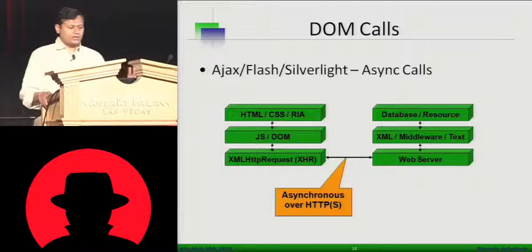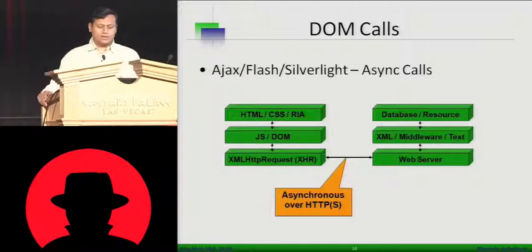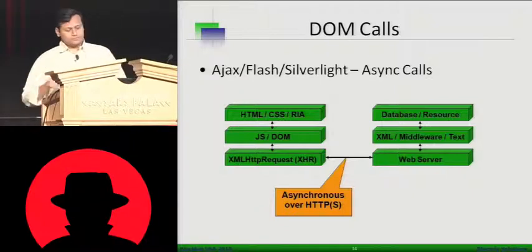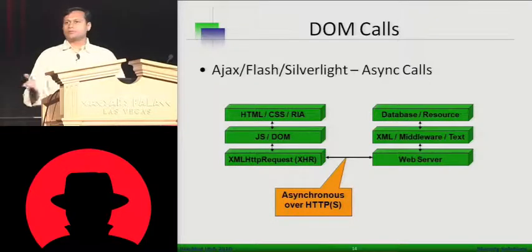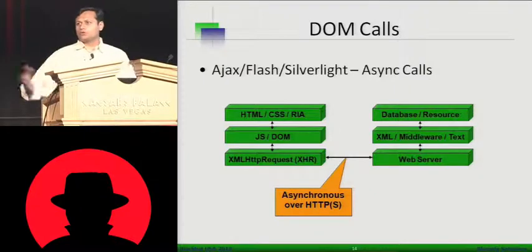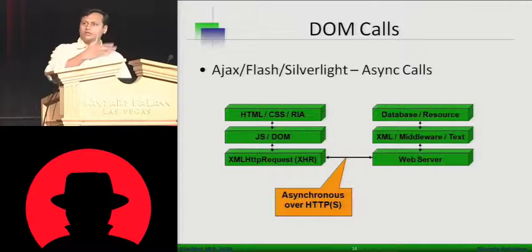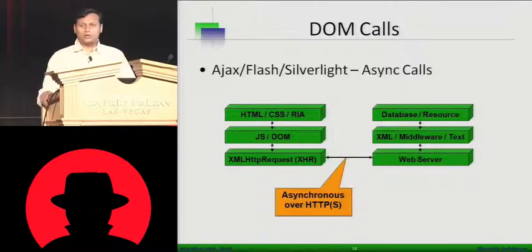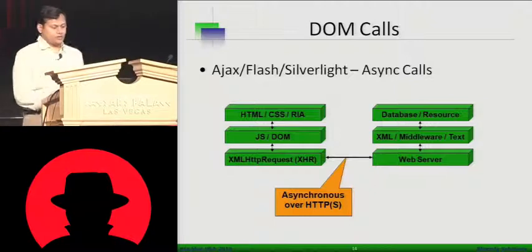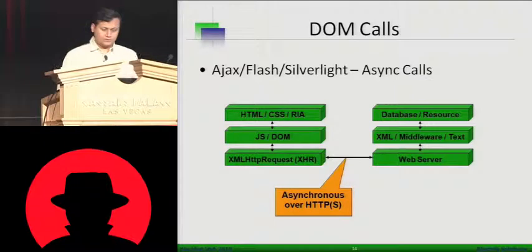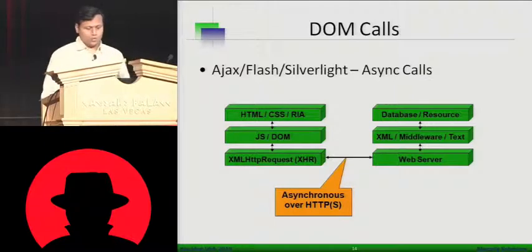When DOM calls happen, HTML will use JS and call the XHR object. XHR object will make an asynchronous call. This is a fundamental difference between Web 1.0 and 2.0, because in 2.0 you can make an asynchronous call — so it will wait for the callback. When the callback comes, it will load the image or whatever you asked for. New data gets loaded in the browser, it will go to the web server, which makes a call to XML, middleware, text, etc., retrieves the data resource, and the whole thing goes back.